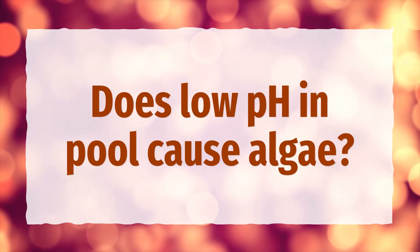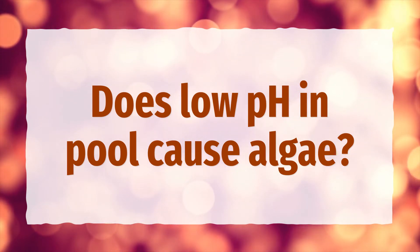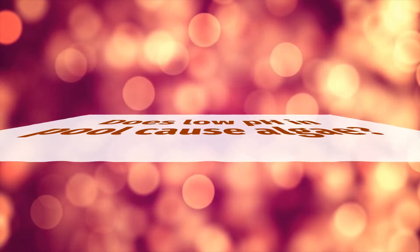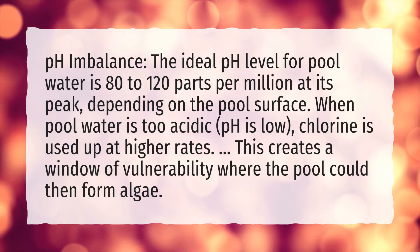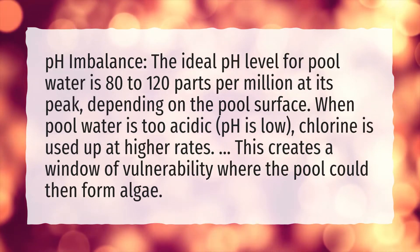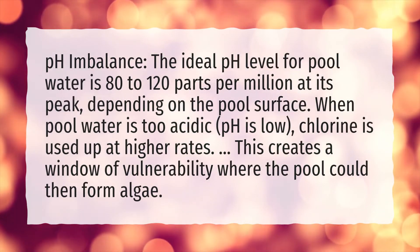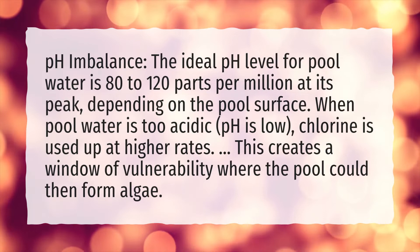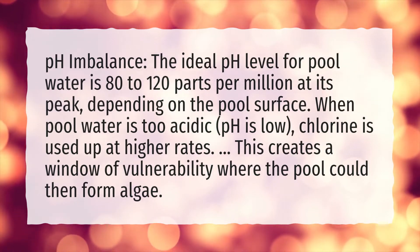Does low pH in pool cause algae? pH imbalance. The ideal pH level for pool water is 80 to 120 parts per million at its peak, depending on the pool surface.